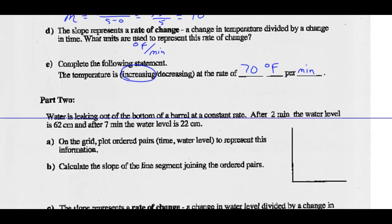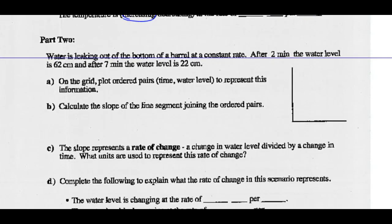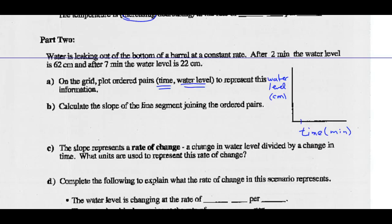Part 2: Water is leaking out of the bottom of a barrel at a constant rate. After 2 minutes, the water level is 62 centimeters, and after 7 minutes, the water level is 22 centimeters. On the grid, plot ordered pairs for time and water level. Time is our x-axis in minutes, and water level is our y-axis in centimeters. At 2 minutes the water level is 62 centimeters, and at 7 minutes the water level is 22 centimeters.